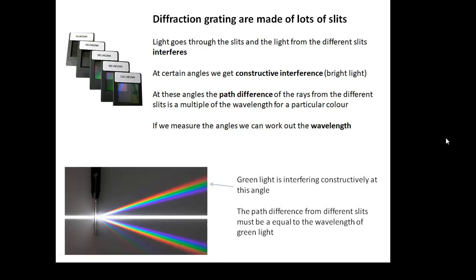Okay, so we shine light through the diffraction grating and then the different wavelengths or different colours, we get constructive interference at different angles. For example, in this photograph, you see that green light is at a particular angle. That's because the path difference for different slits is equal to the wavelength of green light at that angle.